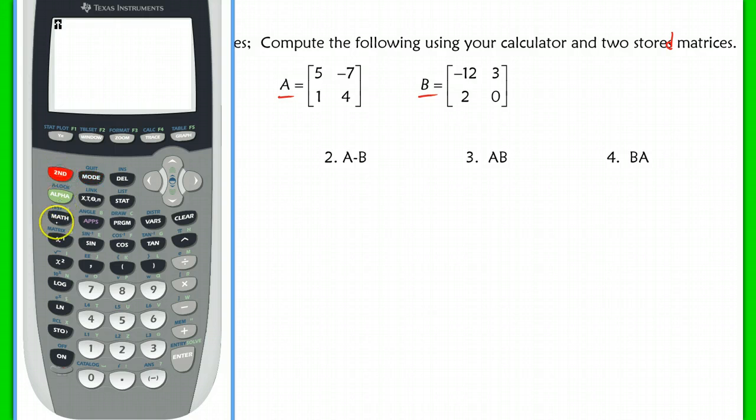So again, it's second matrix, which is right above that key here. Scroll over to edit. Now we're going to scroll down to B. Now do you see how in matrix A here I have a 2 by 2, so it's telling me what the dimensions are of the matrix that I just edited. So I'm going to hit this again and do 2 by 2 and enter all that data.